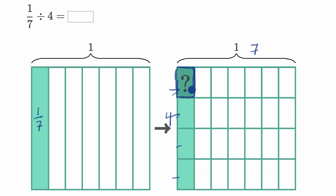And so 1/7 divided by four is going to be one of these 28 sections. So this right over here is one over 28. So this is 1/28th.